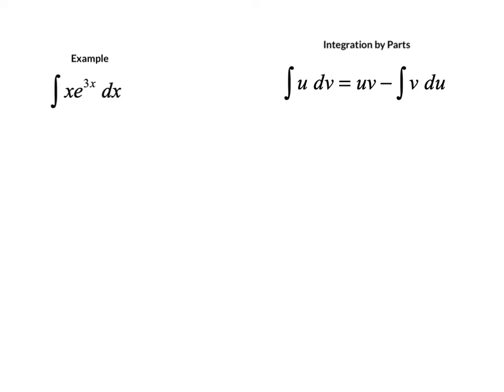It's not a substitution. If we had e to the 3x squared, that would work out okay as an e to the u case of a u substitution. But we need a different technique here, and the one that we're going to use is called integration by parts.